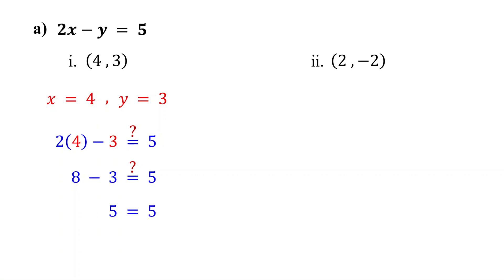Therefore, since both sides of the equation equal 5, the point 4 comma 3 is a solution to the equation, so it is on the line.